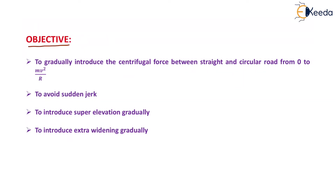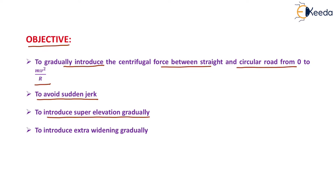The objectives of providing a transition curve are: first, to gradually introduce the centrifugal force between straight and circular road from 0 to mv²/R; second, to avoid sudden jerk; third, to introduce super elevation gradually; and fourth, to introduce extra widening gradually. If we provide a transition curve at the junction, we avoid the sudden jerk condition.